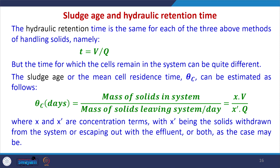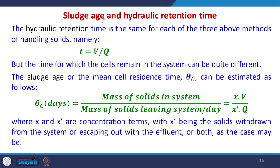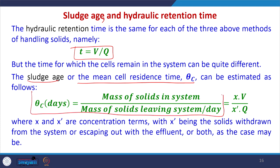Important design terms: the hydraulic retention time (HRT) is the same for all three systems, defined as t equals V/Q. However, the time for which cells remain in the system can differ. The sludge age or mean cell residence time (theta_c) is defined as the ratio of the mass of solids in the system divided by the mass of solids leaving the system per day.